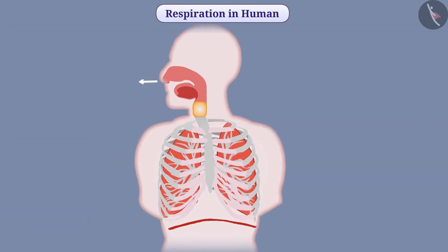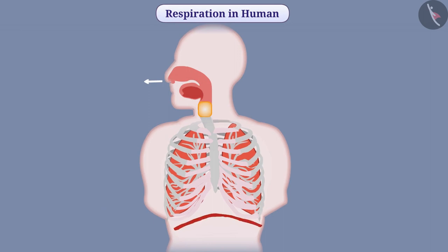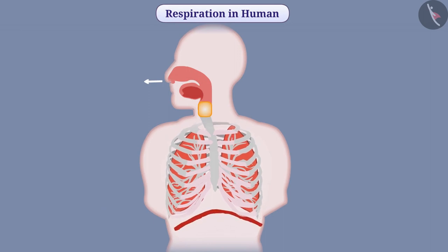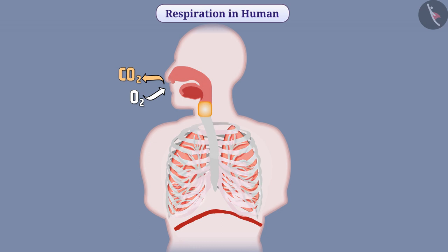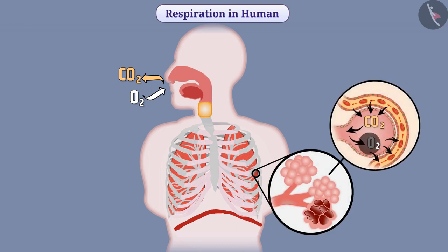While exhaling, the diaphragm becomes dome-shaped, causing the ribs to come down and the chest cavity to become smaller. As a result, air comes out of the lungs. In the process of inhaling and exhaling, a residual volume of air remains inside the lungs. In this way, there is sufficient time for absorption of oxygen and release of carbon dioxide in the alveoli.